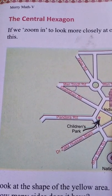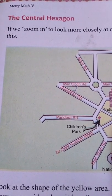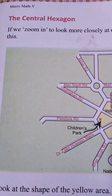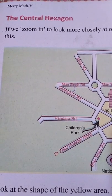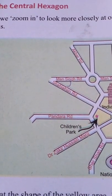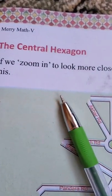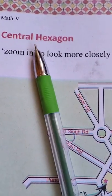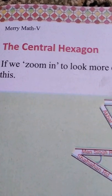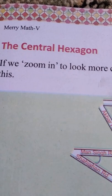Dear students, Assalamu Alaikum. My kids, I am going to tell you all about the Mapping of the Way. Today we have the questions on page 123. The Central Hexagon — 'central' means center. Hexagon means six sides. If you make a circle and mark a tip at the center point, that is the central hexagon.